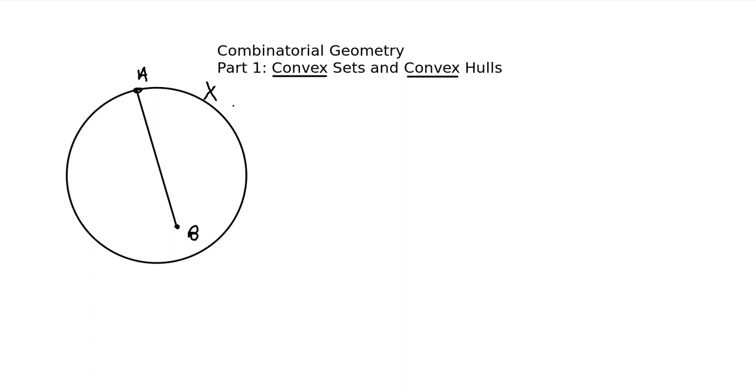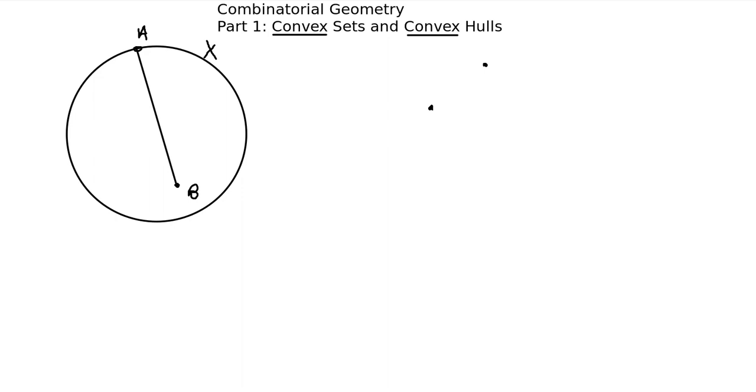So, next is the convex hull. The convex hull is sort of an operation on a set of points. So, let's take these four points, or let's say five here. So, a convex hull is the smallest convex polygon which contains all of the points, the entire set.